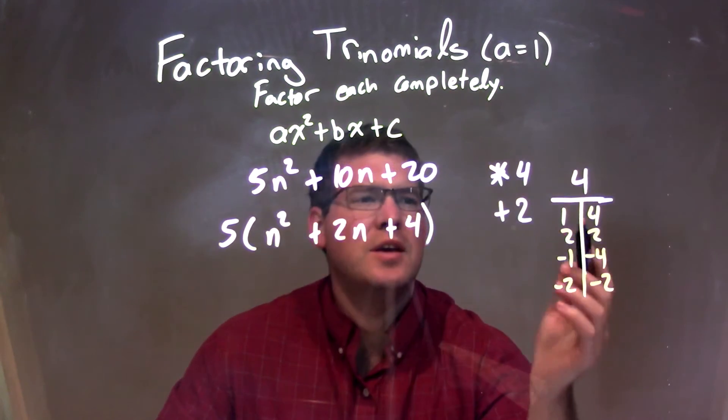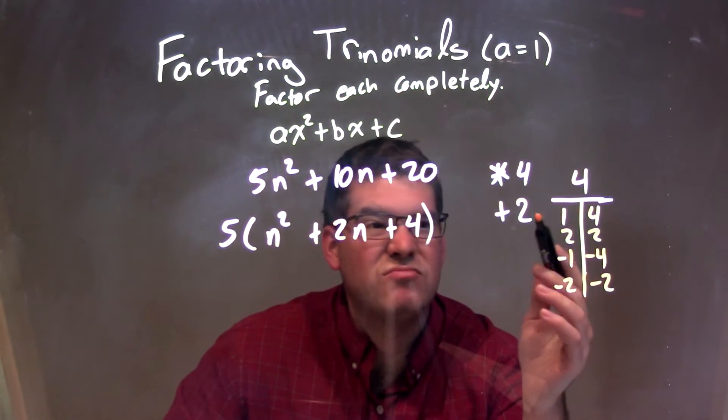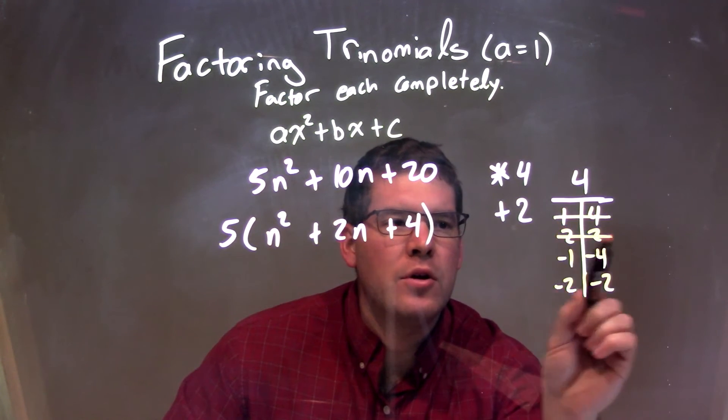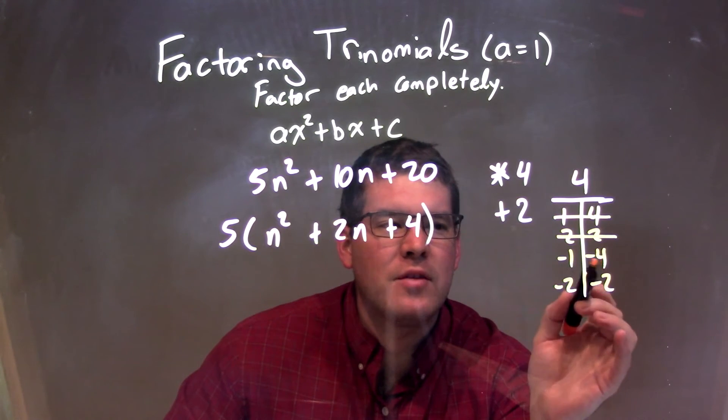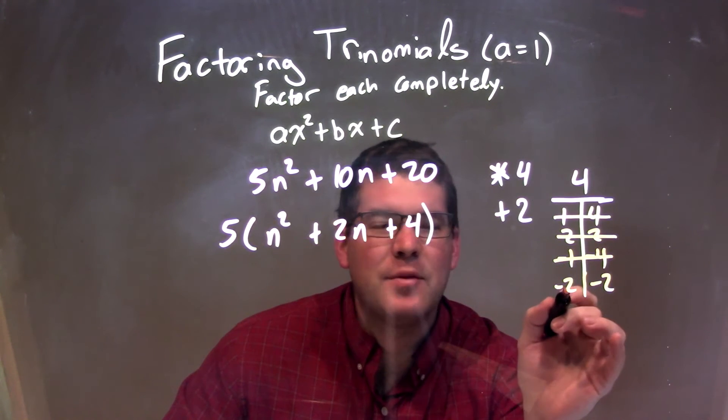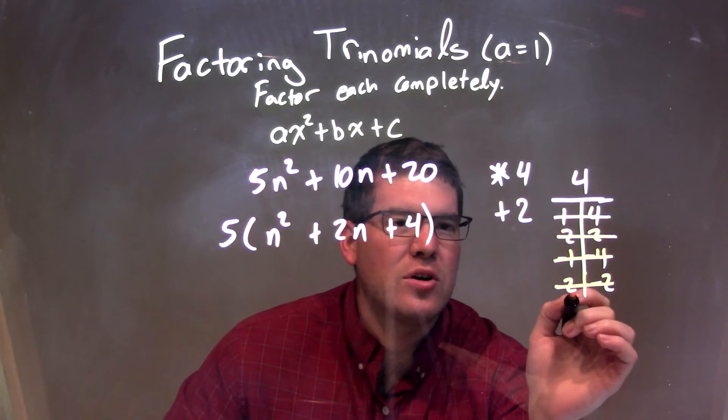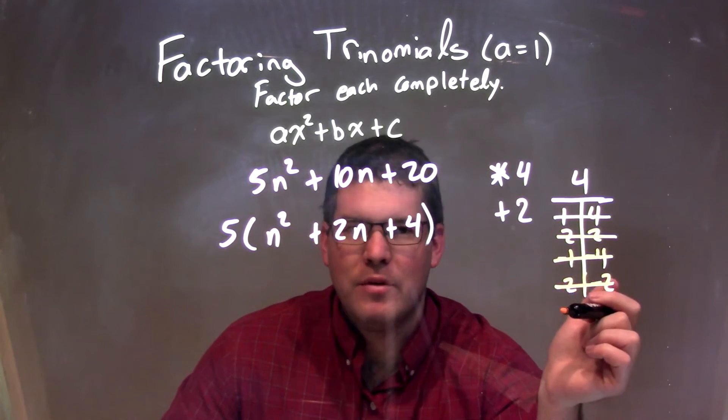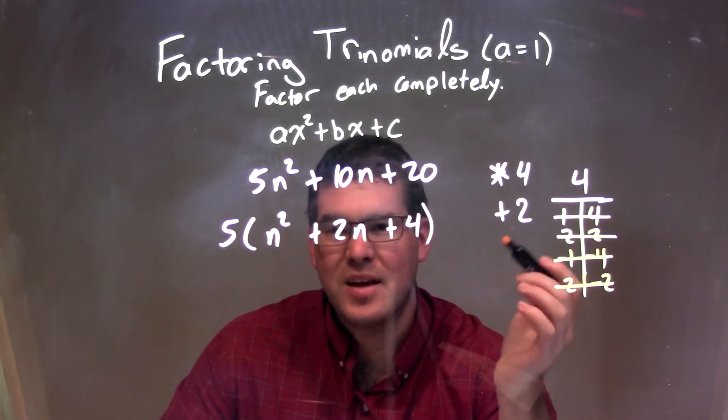So let's go see if they can add to be a 2. 1 plus 4 is 5, so no. 2 plus 2 is 4. Nope. Negative 1 plus negative 4 is negative 5. Nope. Negative 2 plus negative 2 is negative 4. So we have no options, right? All the combinations that multiply to be a 4, none of them add to be a 2.